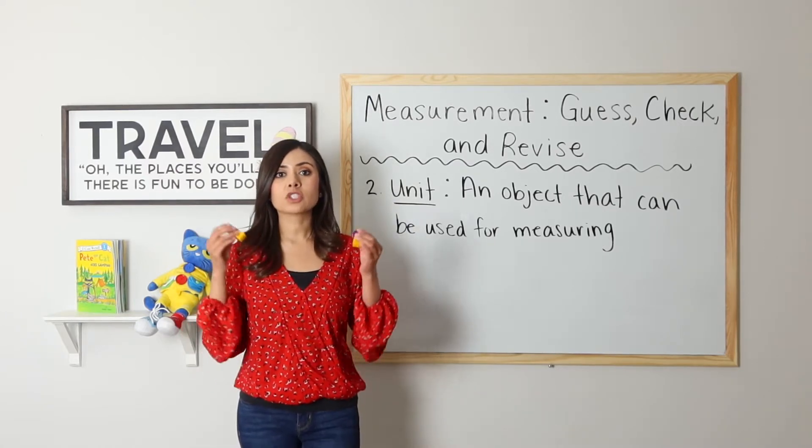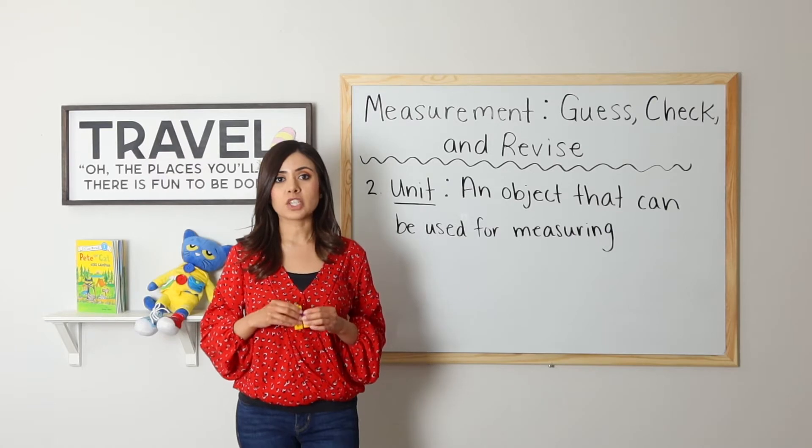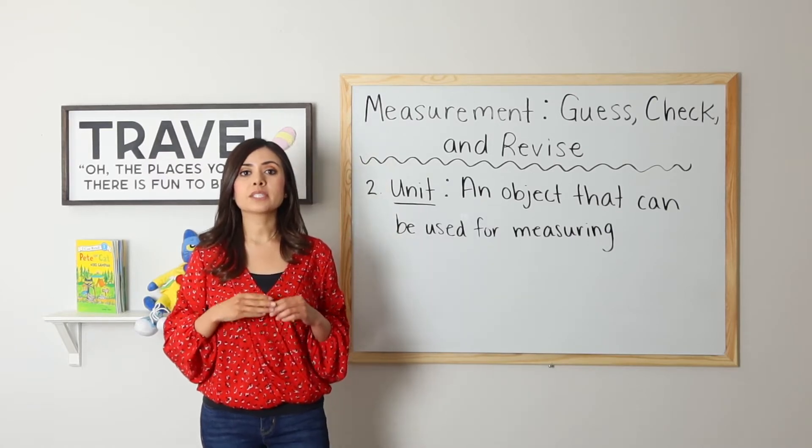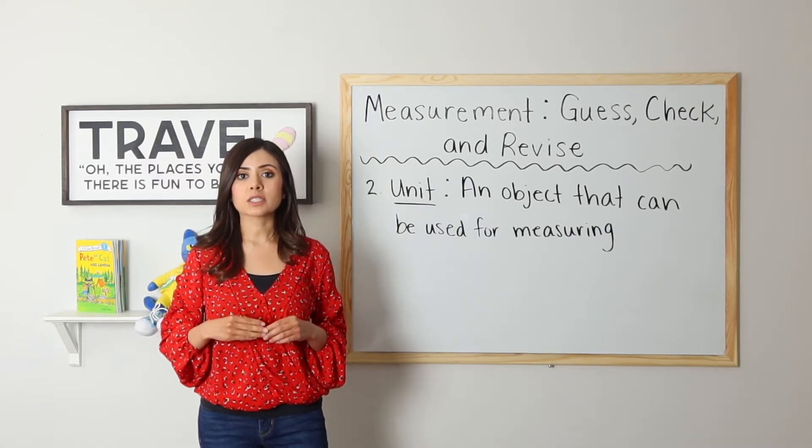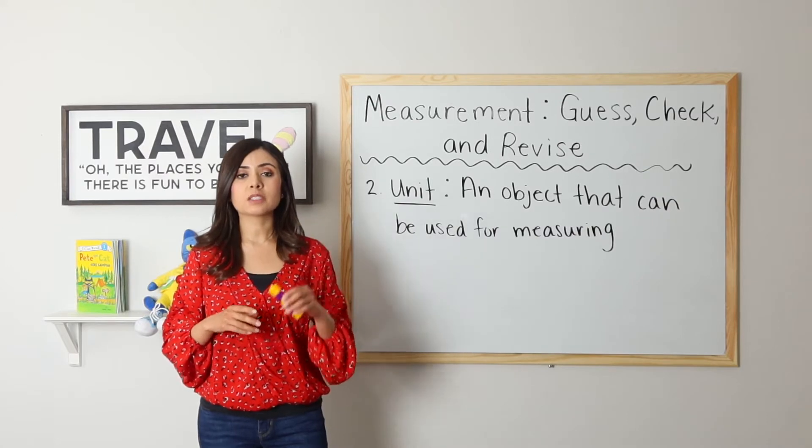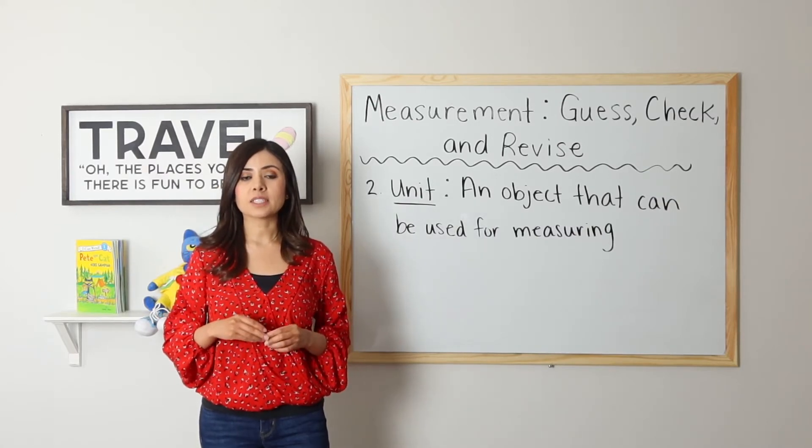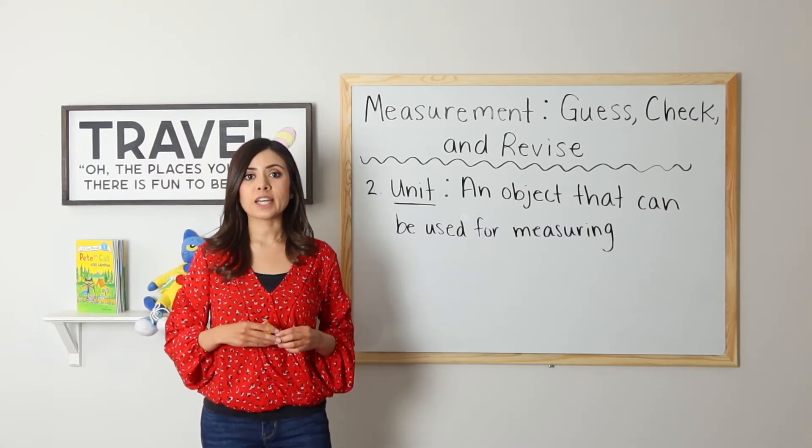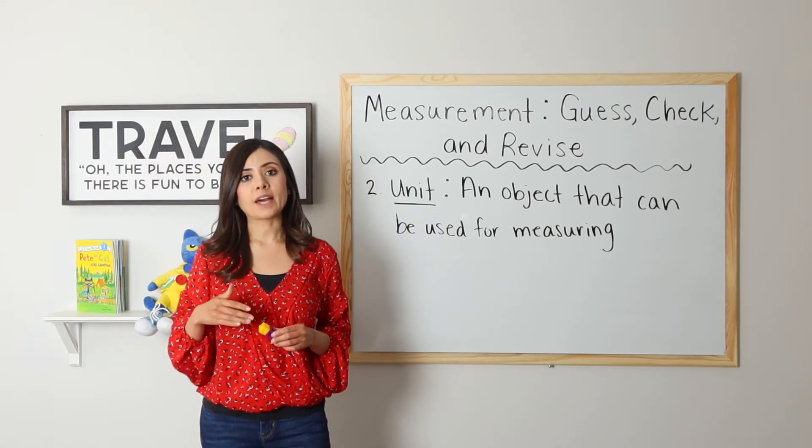In our last video, we used cubes to help us measure objects. For this lesson, we are going to guess the length of different objects. We will then use our cubes to check if those guesses are correct. If they are not, we will revise. That means that we will go back and fix it.